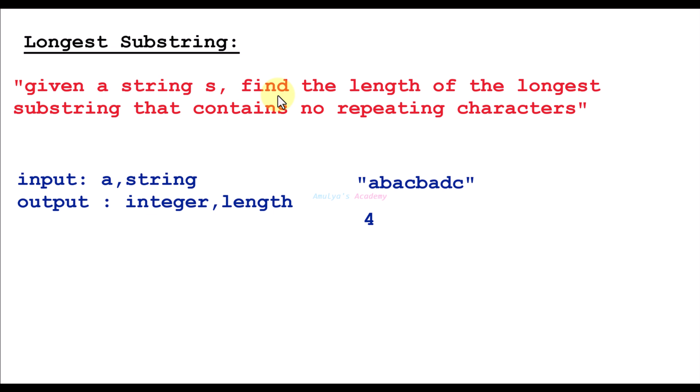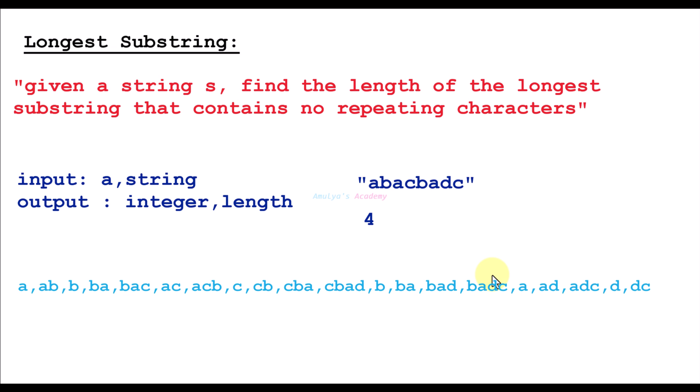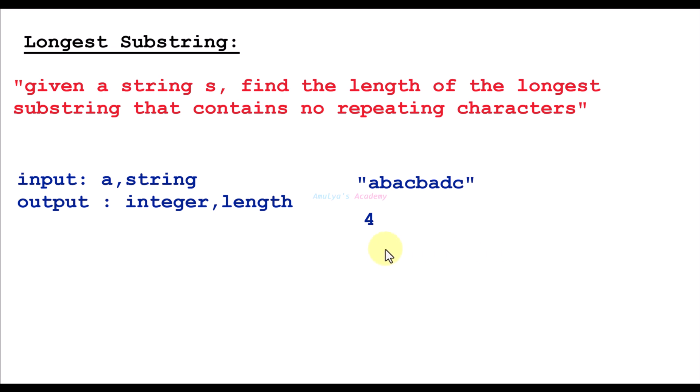The input of our program is a string and the output is an integer number that is the length of the longest substring. For example, in this string the length of the longest substring is 4. Here you can see all the substrings without repeating characters. A substring is a consecutive sequence of characters within a string, and here we want to find the length of the longest substring.